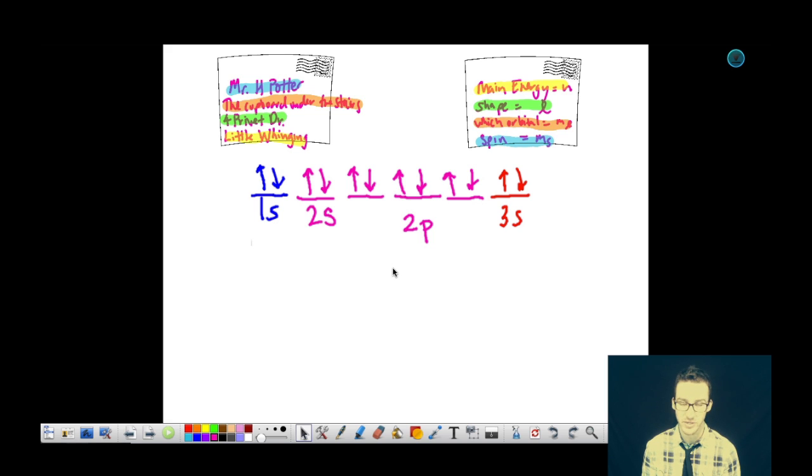Now let's talk quantum numbers. Quantum numbers are just going to describe where is a given electron in the electron cloud. I could write a set of quantum numbers for any one of the electrons in this electron cloud. To do that, I need a set of four quantum numbers.